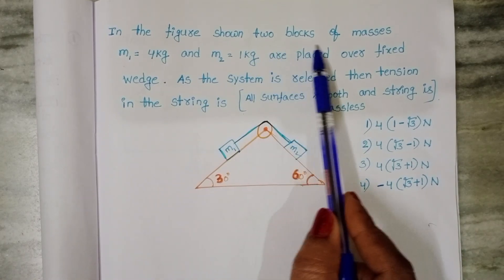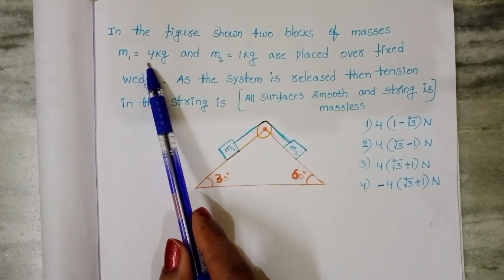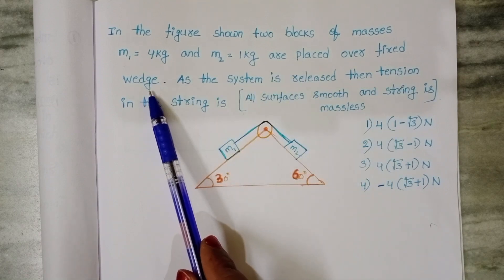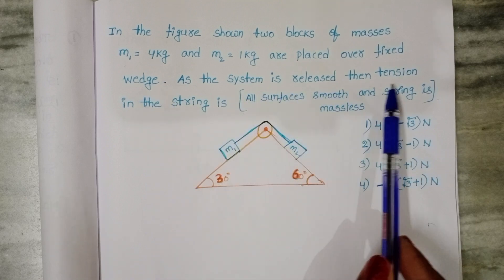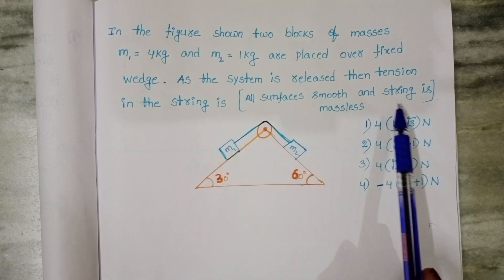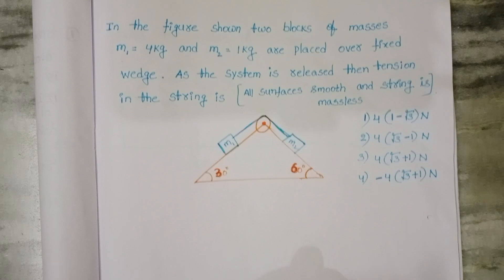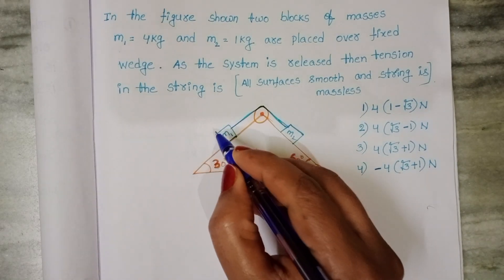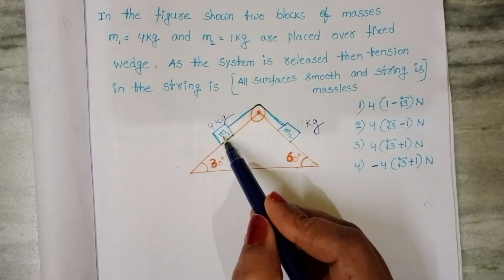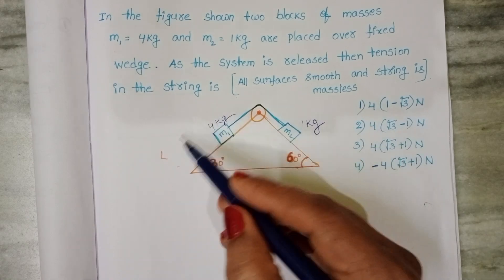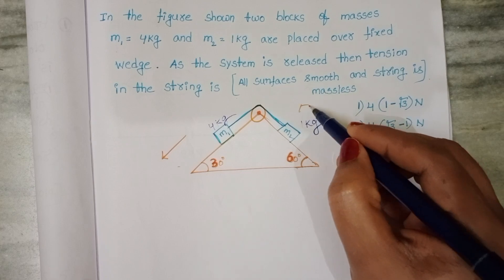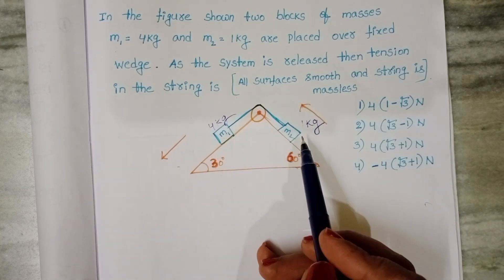In the figure shown, two blocks of masses M1 equals 4 kg and M2 equals 1 kg are placed over a fixed wedge. As the system is released, the tension in the string is to be found. The surfaces are smooth and the string is massless. The acceleration of M1 acts in the downward direction and acceleration of M2 in the upward direction, because M1 is greater than M2.